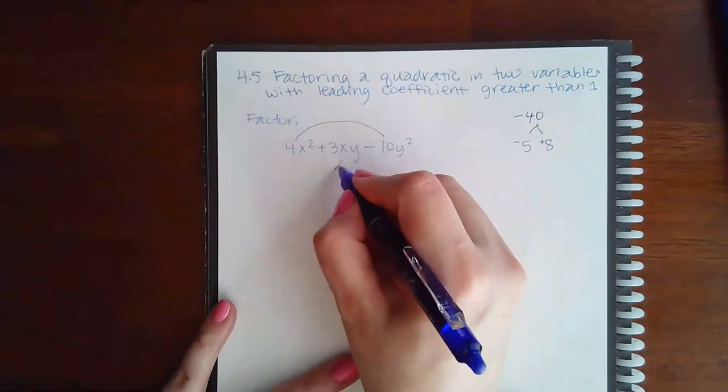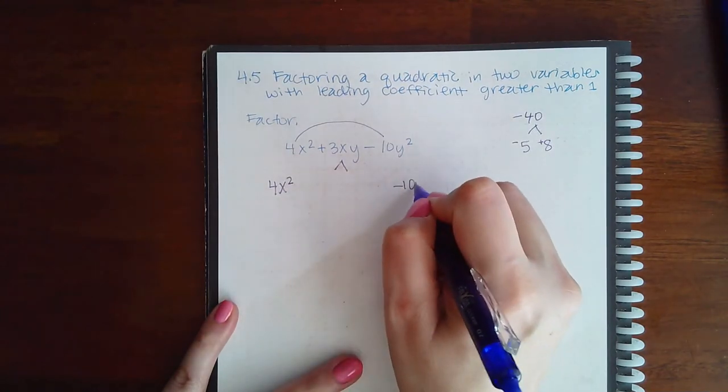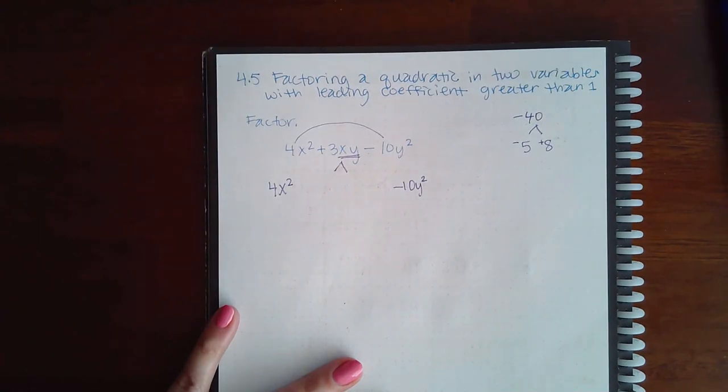What do we do with those two numbers? We use them to split the middle term. And we have to keep whatever variable or variables, plural, that that middle term has.